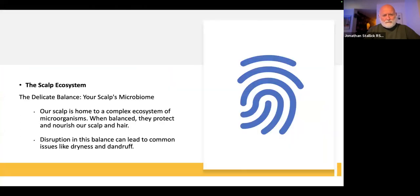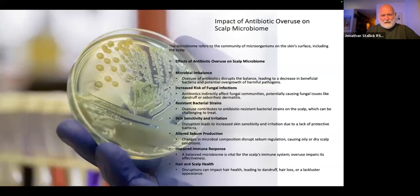Let's look at the scalp's microbiome. Our scalp is home to a complex ecosystem of microorganisms which protect and nourish our scalp health. It's like the organisms in our bowel - when it's in balance, they are our friendly bacteria which help us and help our digestion, but when it's out of balance it causes problems. Disruption in this balance can lead to common issues like dryness and dandruff.